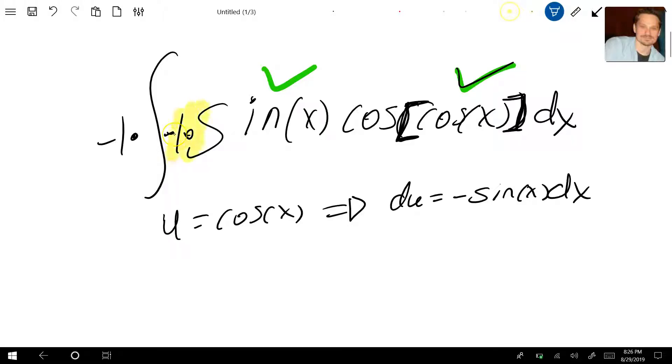But this is really useful, because now that you see this piece, together with that piece, match this piece perfectly. See that negative sine x dx is equal to du. So let's fix that.